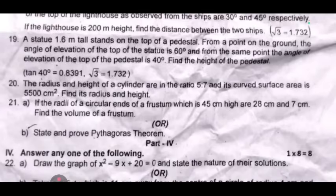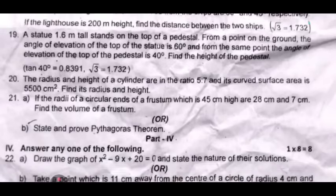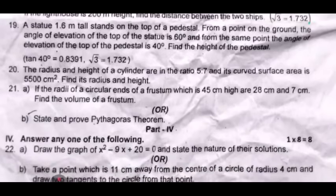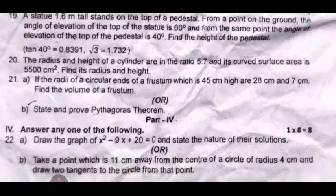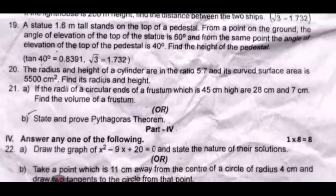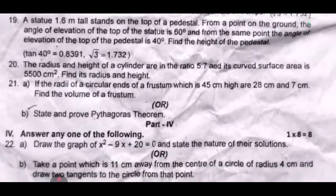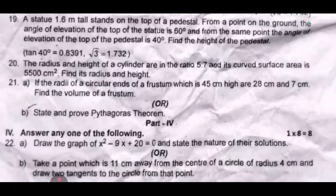Question 20: The radius and height of a cylinder are in the ratio 5 to 7 and its curved surface area is 5500 cm squared. Find its radius and height. Question 21: If the radii of the circular ends of a frustum of height 45 cm are 28 cm and 7 cm, find the volume of the frustum.